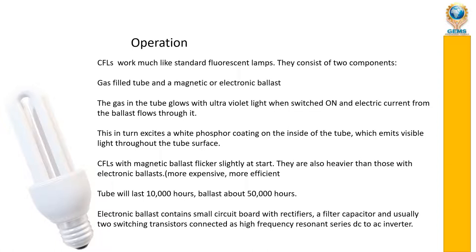CFLs with magnetic ballast flicker slightly at start and are heavier than those with electronic ballast. Electronic ballast is more expensive but more efficient. With electronic ballast, the tube lasts 10,000 hours and the ballast itself lasts 50,000 hours. The electronic ballast contains a small circuit board with a rectifier, filter capacitor, and two switching transistors, connected as a high-frequency resonant series DC inverter.